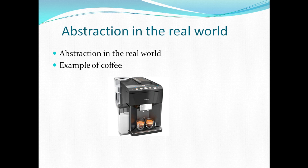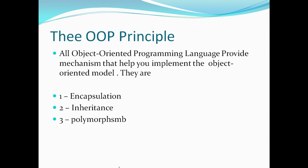We'll see in our program later how we use abstraction in object oriented programming through Java. Hope you understand the main concept of abstraction. Now let's move to the next slide — the three OOP principles. All object oriented programming languages provide mechanisms that help you implement the object oriented model. They are: 1. Encapsulation, 2. Inheritance, 3. Polymorphism.